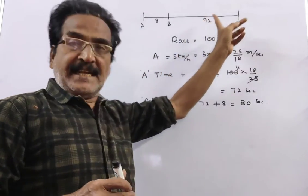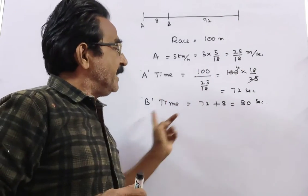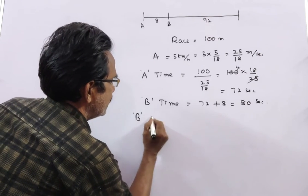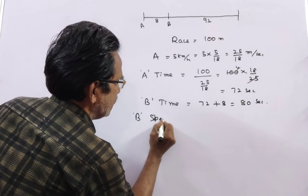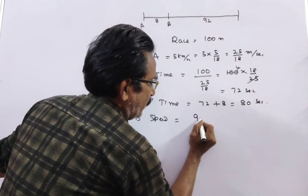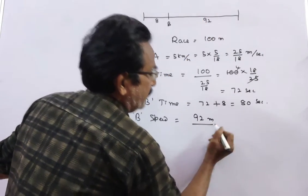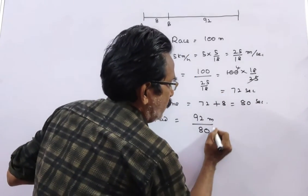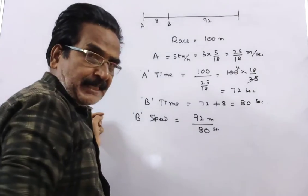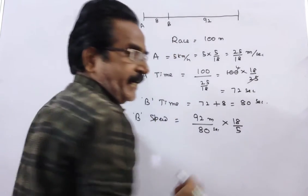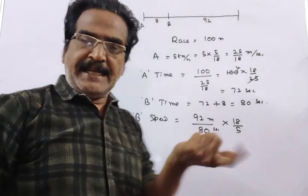So B takes 80 seconds. B's speed is equal to B travels 92 meters only in 80 seconds. This is meters per second. By doing 18 by 5, we get velocity in kmph.